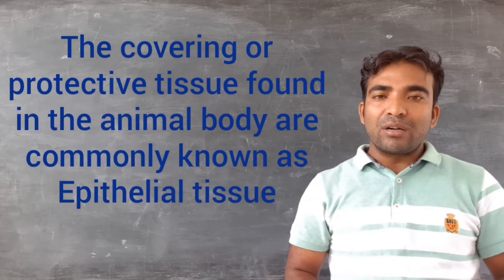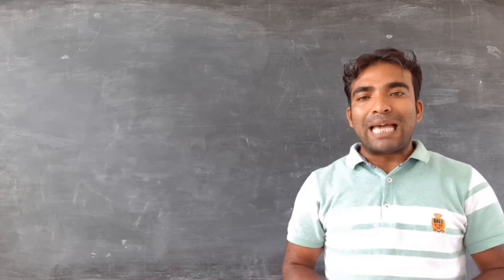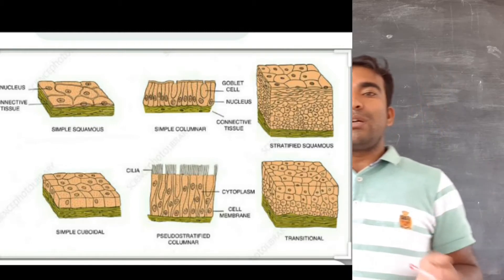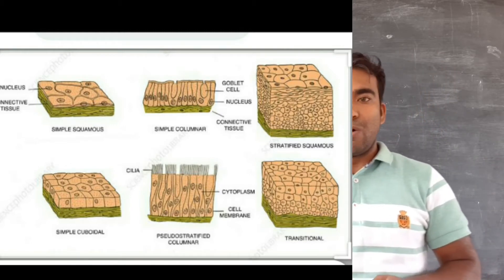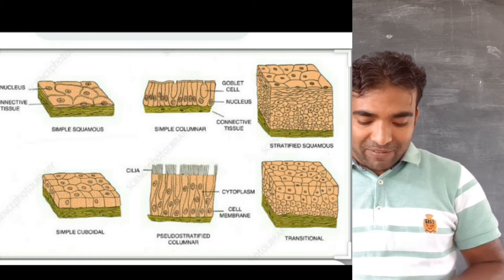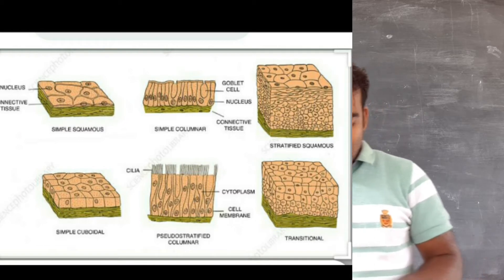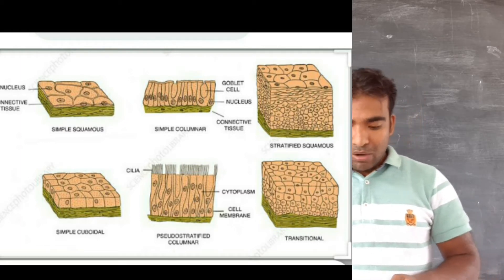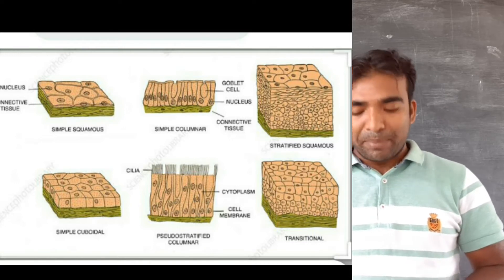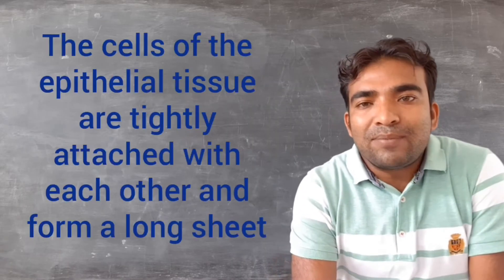Epithelial tissue covers most of the organs and cavities in our body. The covering or protective tissues found in our body, most of these tissues cover the cavities and organs. Examples include the skin, the lining of the mouth, and the lining of blood vessels - these are all made up of epithelial tissue.